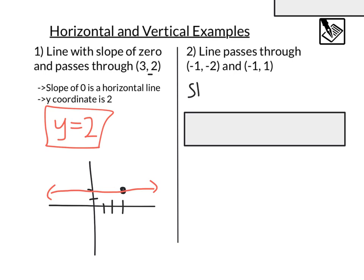Now if we went to find our slope, we know that that equals our change in y. In this case, that would be 1 minus negative 2, over our change in x, which would be negative 1 minus negative 1.